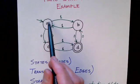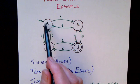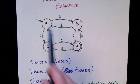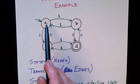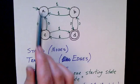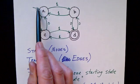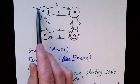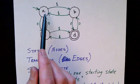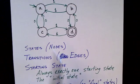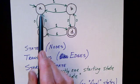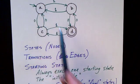Each finite state machine has exactly one node that's distinguished as the starting node, or the initial node. In this case it's node A. So this is our initial node, and we indicate it with a little arrow that comes from nowhere and is unlabeled. Every finite state machine has one node that's the starting node, and this initial state is labeled with an arrow or some other notation.